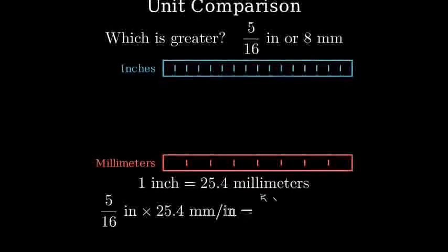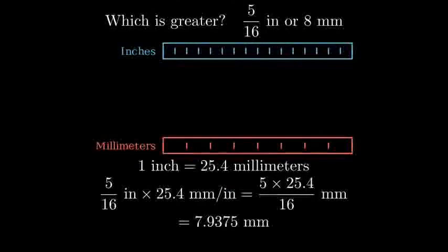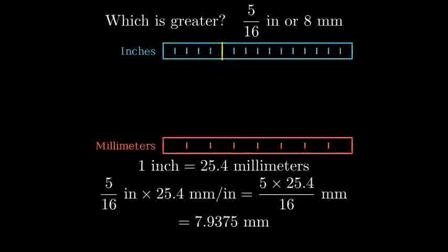Let's convert 5 sixteenths of an inch to millimeters. We'll multiply 5 sixteenths by our conversion factor of 25.4. 5 times 25.4 is 127 divided by 16 equals 7.9375 millimeters.